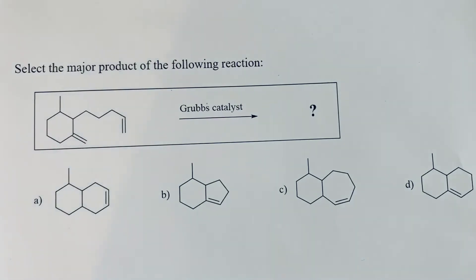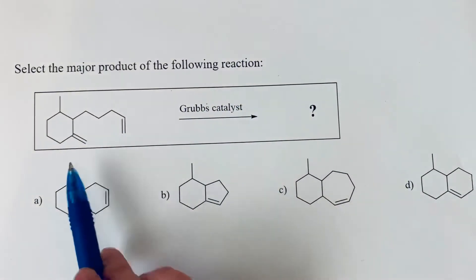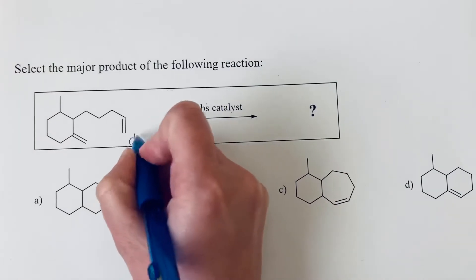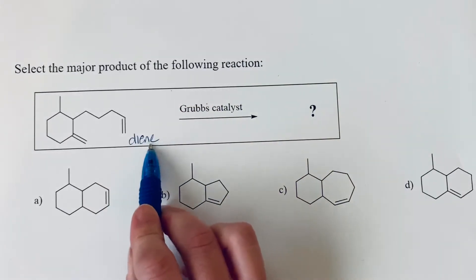Select the major product of the following reaction. So what we have is we have a diene. So that is a molecule with dye or two alkenes.